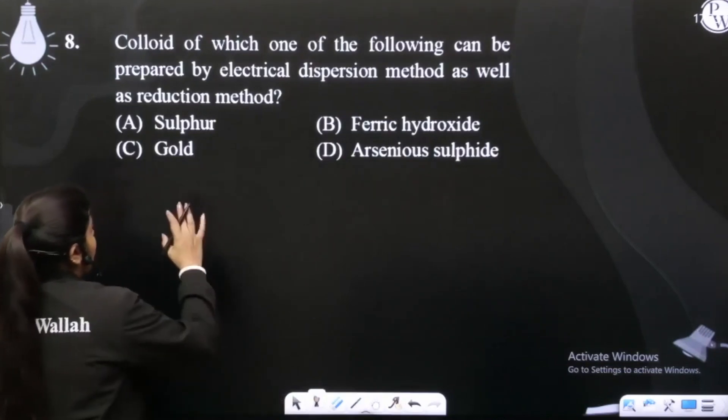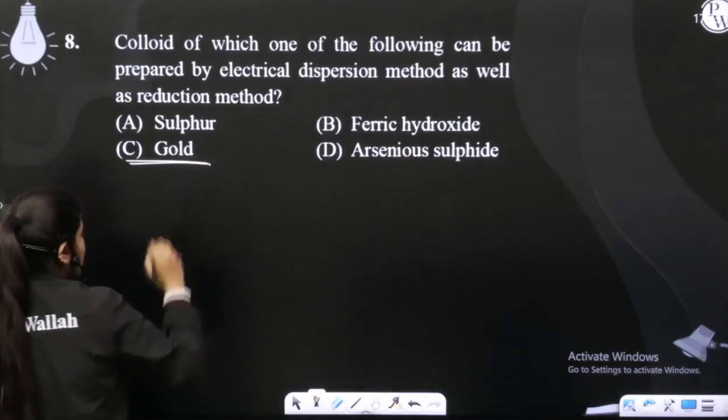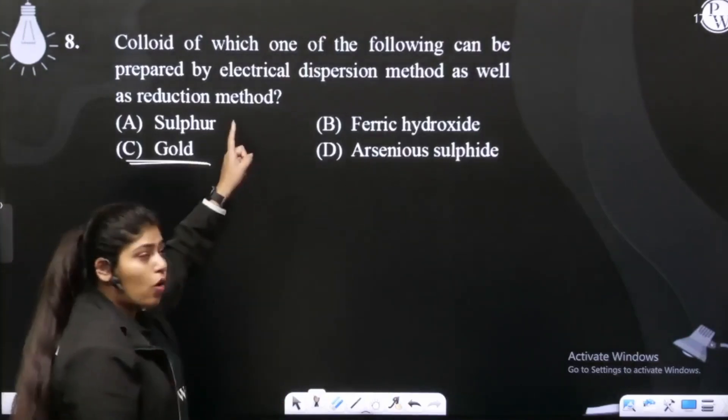Now we are talking about sulfur, ferric hydroxide, arsenic sulfide, and gold. The gold is prepared by both methods - reduction method and Bradyx arc method.